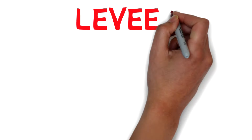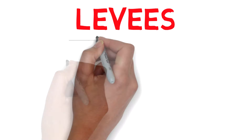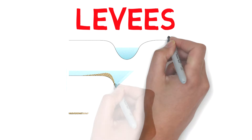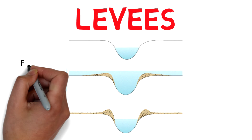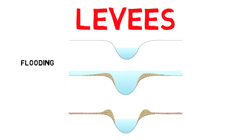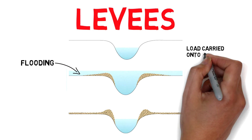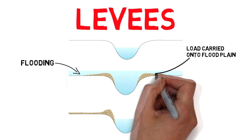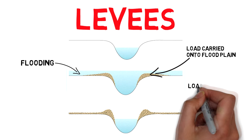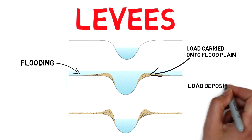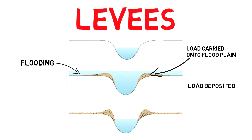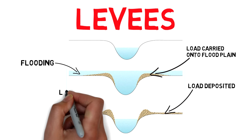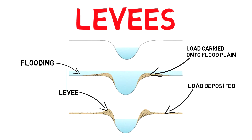The second feature of an old age stage river is a levee. Levees are long narrow ridges of alluvium found along the banks of many old rivers, formed as a result of flooding. Each time the river floods, it carries its load out onto the floodplain as it has a great deal of energy. However, when the flood subsides, it does not have enough energy to carry the load back into the channel, so it deposits it. After numerous floodings, these deposits build up to form levees.